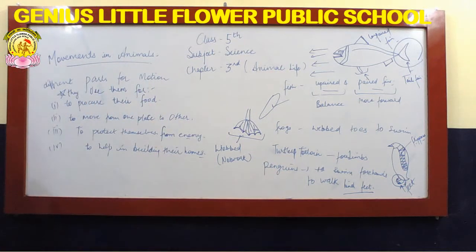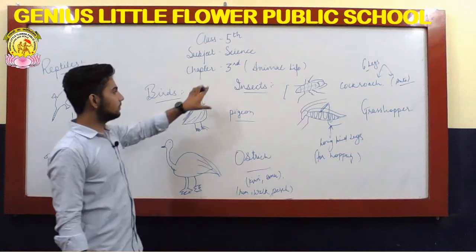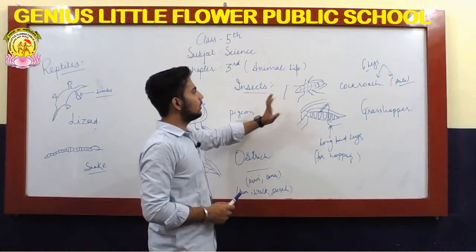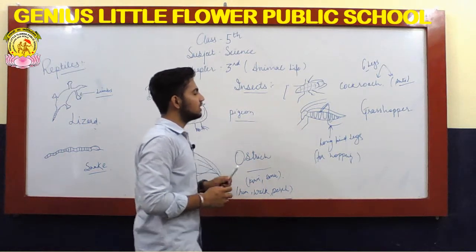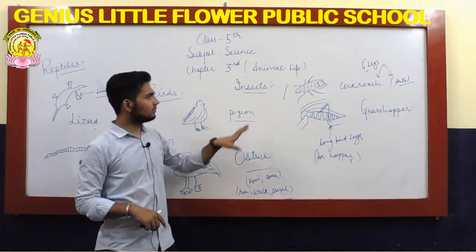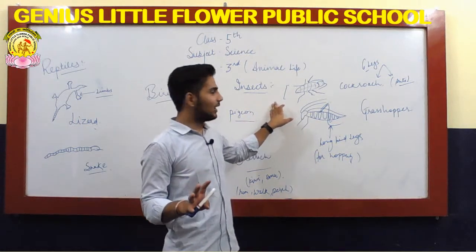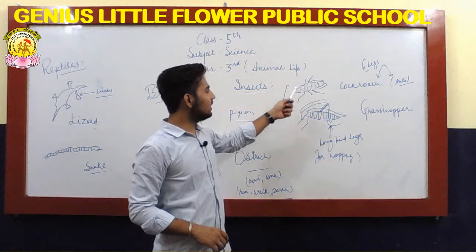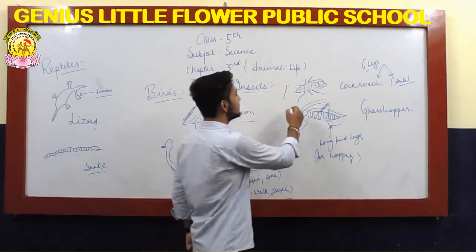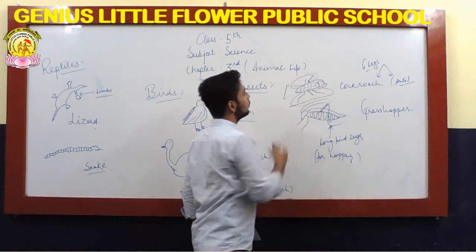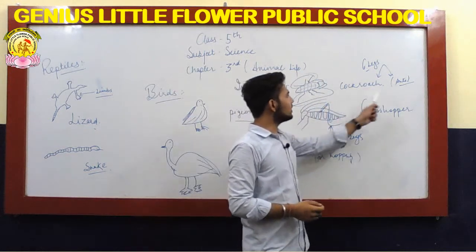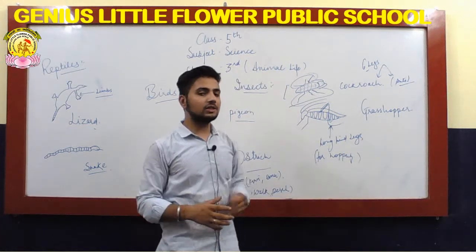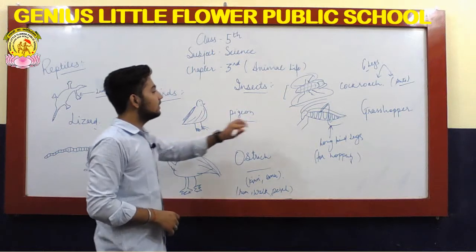Now considering insects: cockroaches and ants are similar types. Cockroaches, as most of you know, have six legs — six limbs — used for motion and crawling. Ants also have six legs for their motion and for the other multiple functions we discussed.